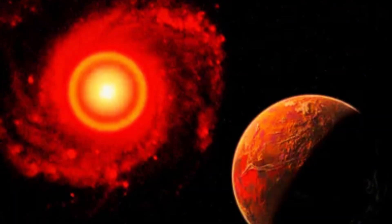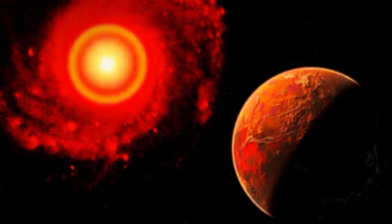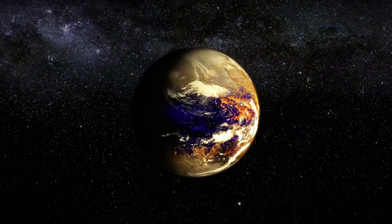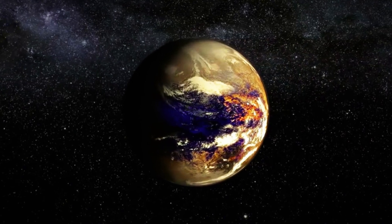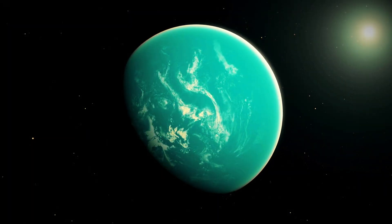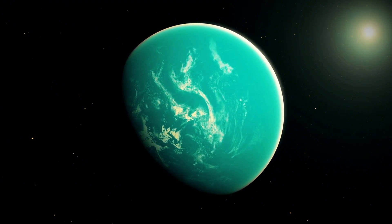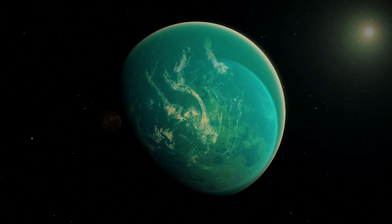The side facing the star would experience intense radiation that could evaporate surface water, while the dark side might see water frozen solid. Additionally, the turbulent nature of Proxima Centauri, with its nuclear fusion occurring near the surface, makes it a hostile place for life to thrive.